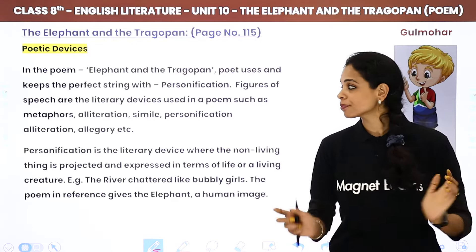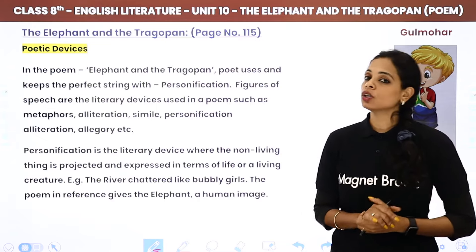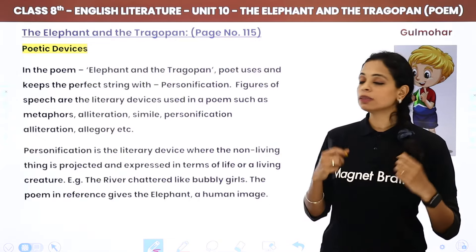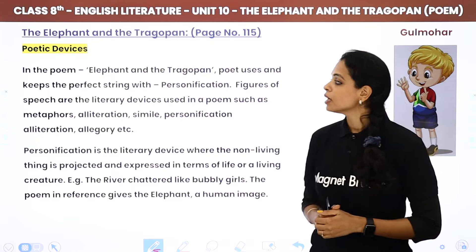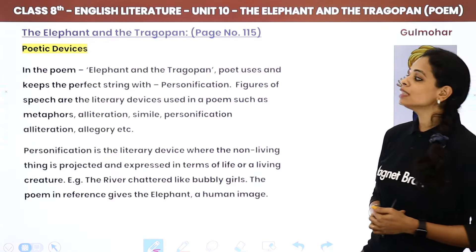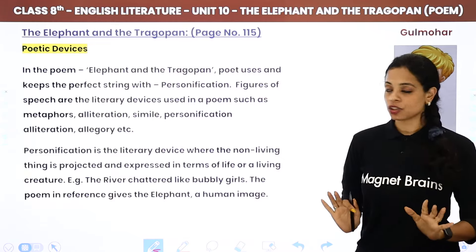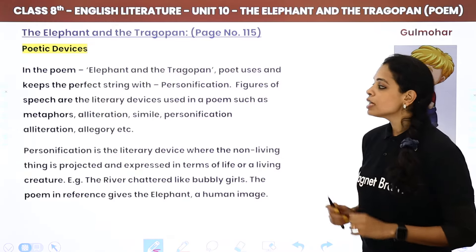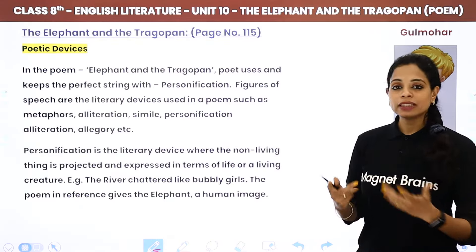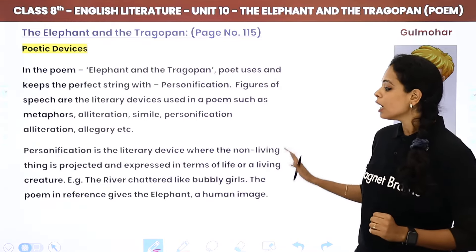Now, the poetic devices used in this poem. Obviously, the first thing we know is that personification is used. In the poem, The Elephant and the Tragopan, the poet uses personification as the key figure of speech. Figures of speech are the literary devices used in a poem, such as metaphors, alliteration, simile, and personification.